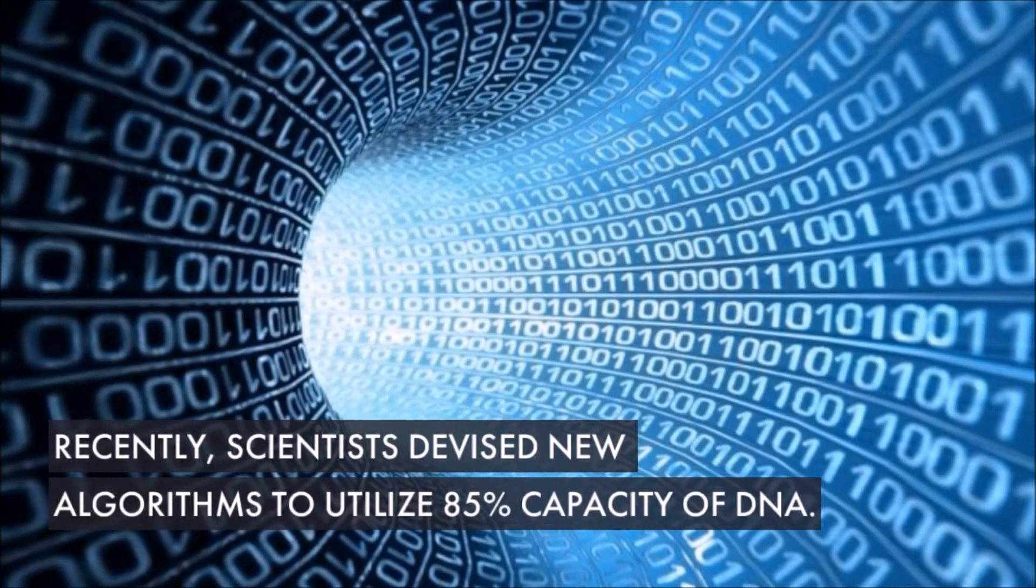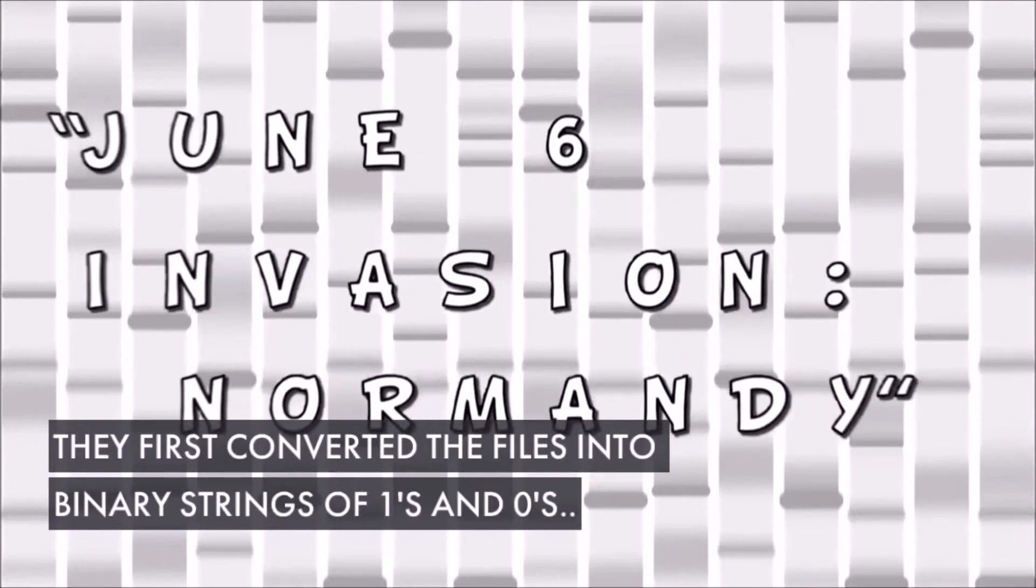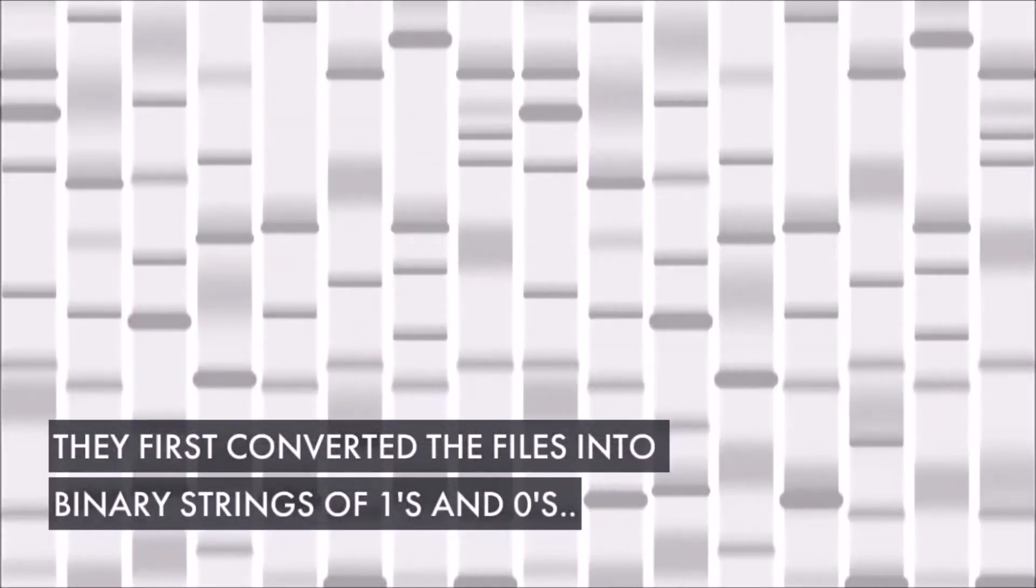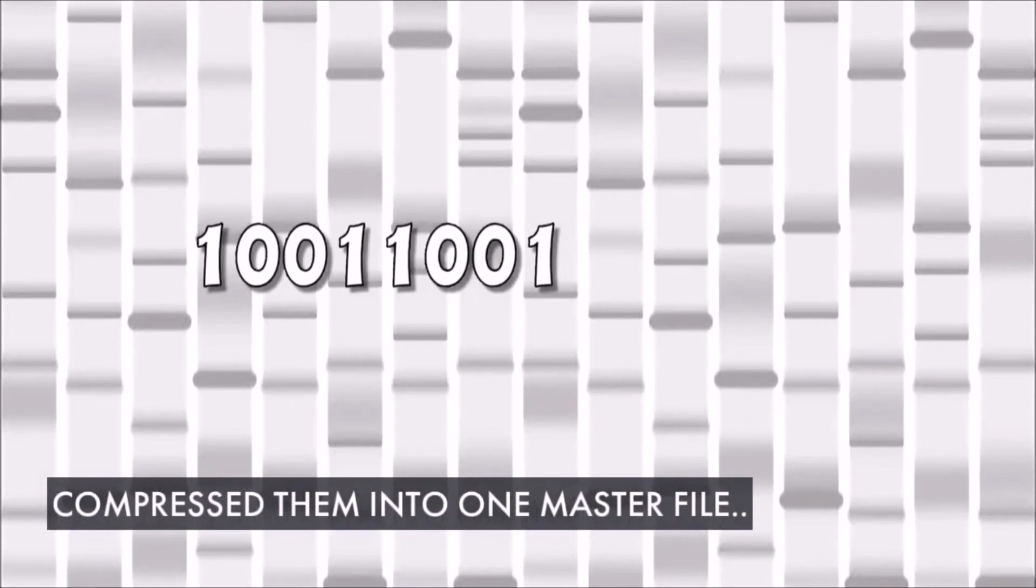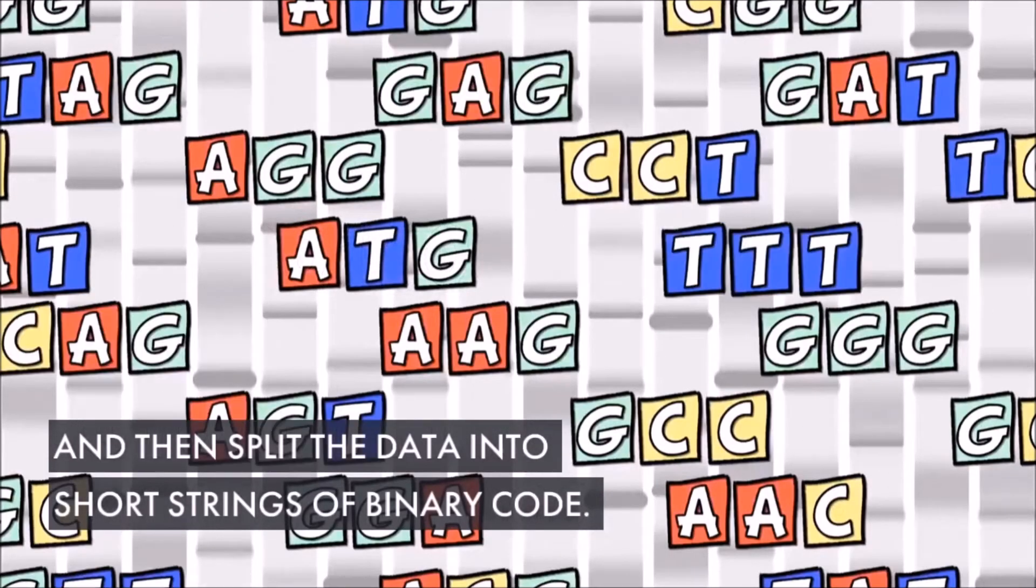Recently, scientists devised new algorithms to utilize 85% capacity of DNA. They first converted the files into binary strings of ones and zeros, compressed them into one master file, and then split the data into short strings of binary code.